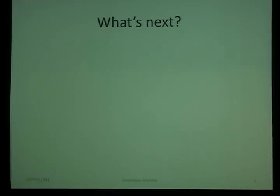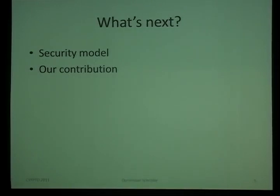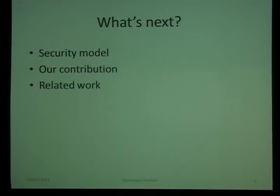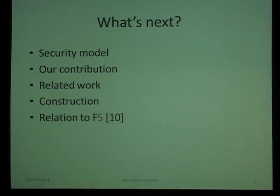Now that you know the main idea, we first have to precisely define what security means. We will then discuss our contribution and state why this problem was important, and explain why it was open for so long. I will go through the related work and point out the main important papers. Then Sanjam will take over and discuss the idea of the joint construction. As you might know, last year at EuroCrypt, Mark Fischlin and I had an impossibility result for three-move blind signatures, and he will discuss the relation.